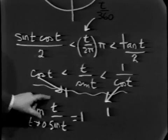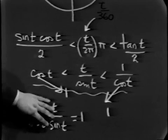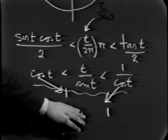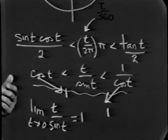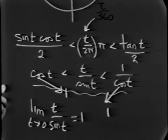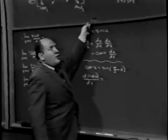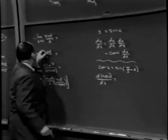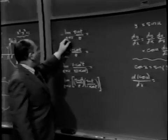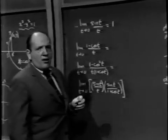Now, of course, since this limit is 1, the limit of the reciprocal of this will be the reciprocal of this. But what's very nice about the number 1 is that it's equal to its own reciprocal. In other words, what we've now shown is that the limit of sine t over t as t approaches 0 is 1.